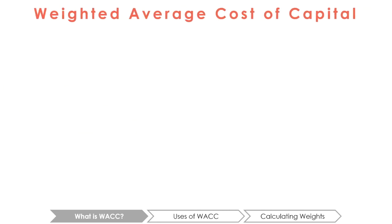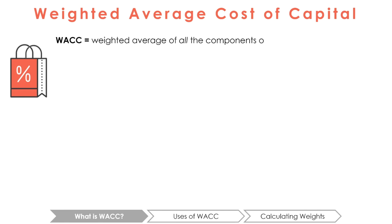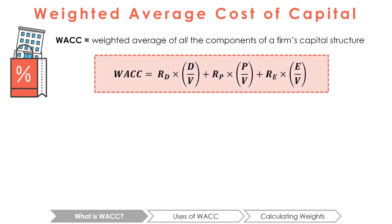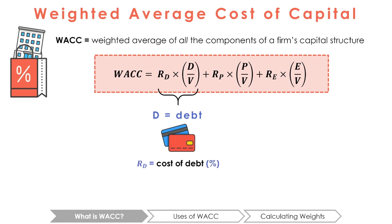One measure of the cost of capital for a firm is the WACC, or Weighted Average Cost of Capital. It takes the weighted average cost of capital across all the components of the firm's capital structure. It is characterized by this formula. You can see that the formula is broken down into components. D stands for debt. The first part of the formula gives us the cost of debt, expressed as a percentage rate, multiplied by the fraction of debt in the firm's capital structure.